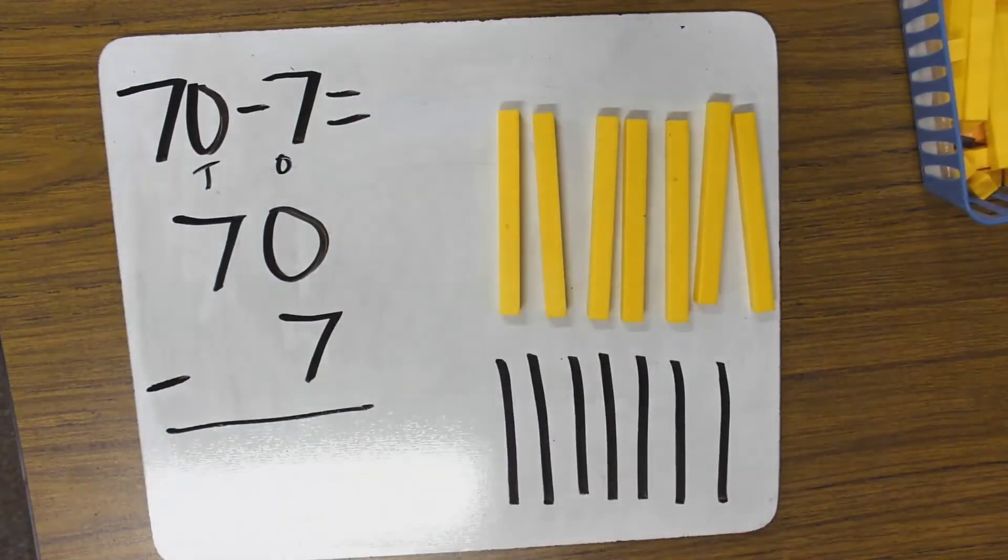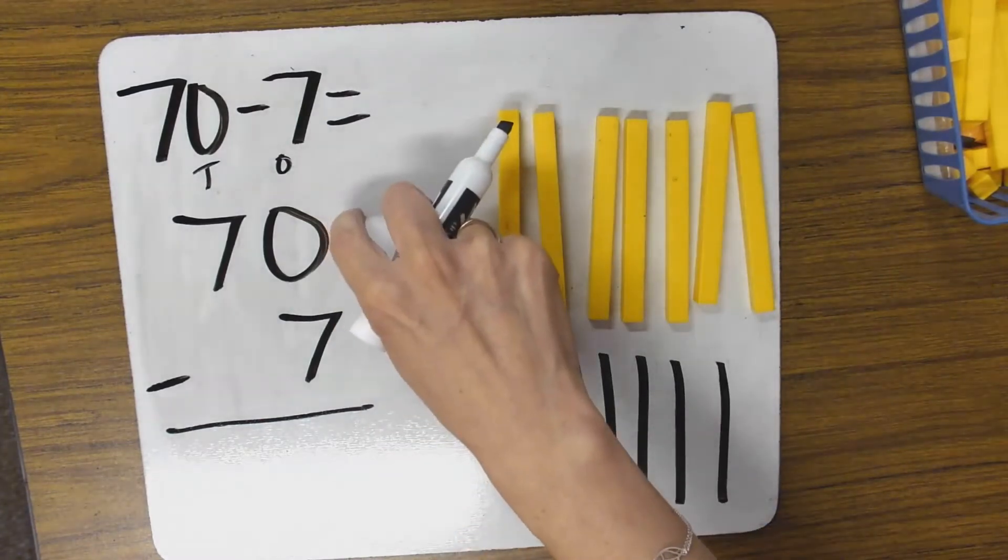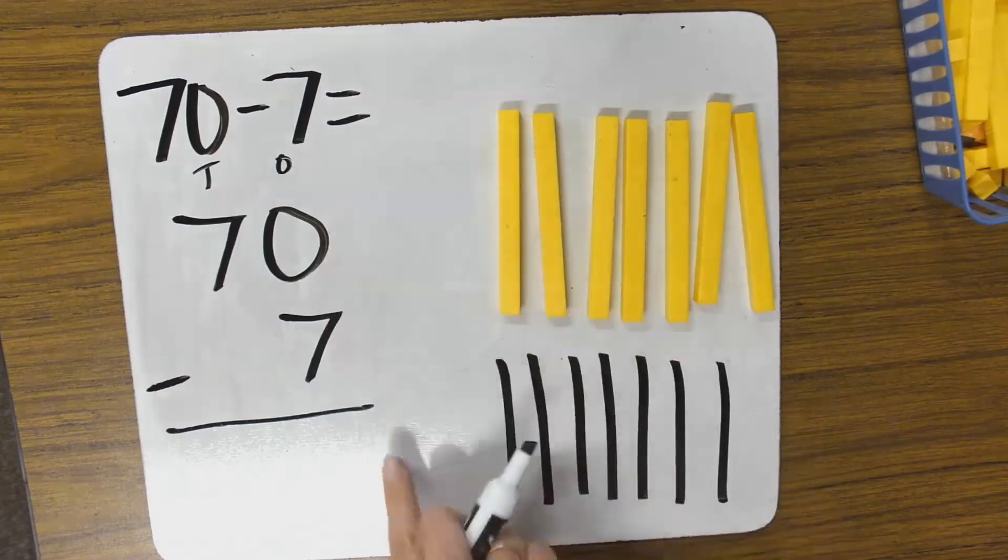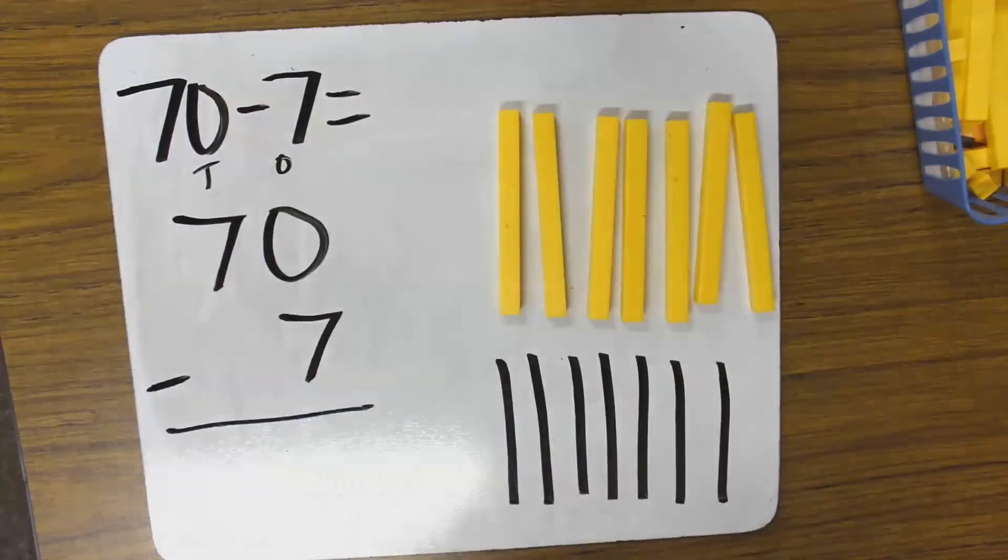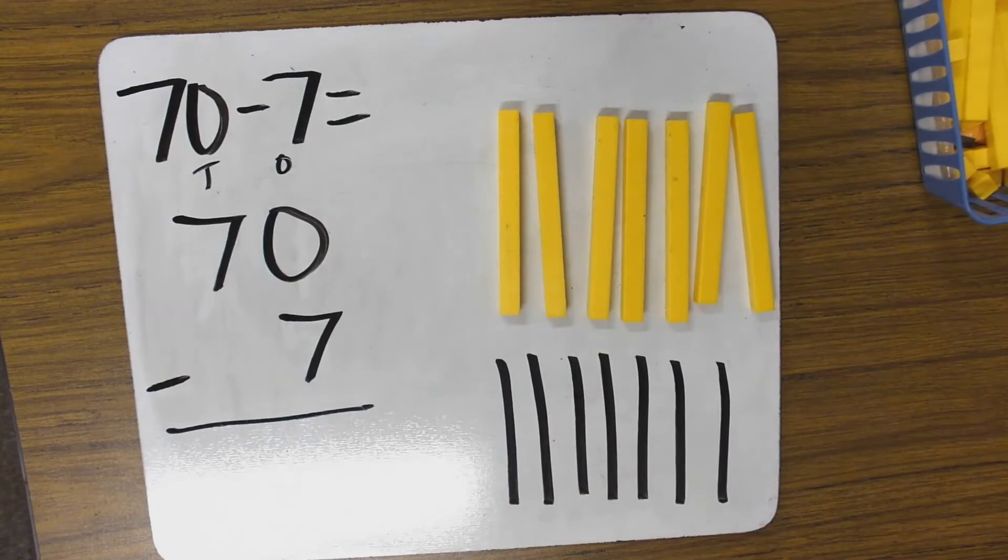0 minus 7. Can I do it? Nope. Should I just do 7 minus 0? Nah. Can't subtract up. Can't subtract backwards. I don't have 7 1s here. I'm taking away 7 1s. So what do I need to do? I need to regroup. Go ahead and see if you can regroup on your own. You can pause if you need to.